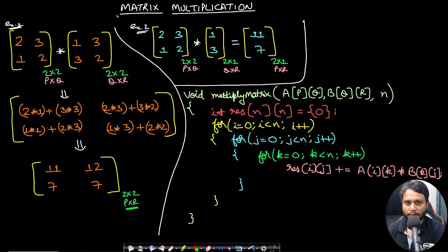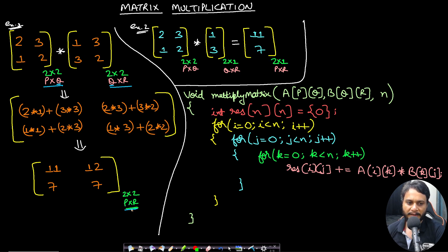The first important thing you should know is how to multiply matrices. If you are multiplying a matrix of size P by Q and another matrix of size Q by R, the number of columns of the first matrix and the number of rows of the second matrix have to be the same. When you multiply, the result will be P by R — the row of the first matrix and the column of the second matrix give the resulting dimension.